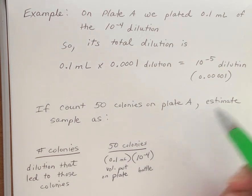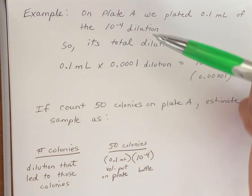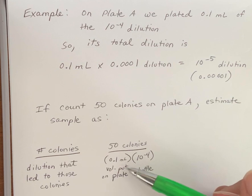So these two together are the same as this 10 to the minus 5. I'm just breaking it down for you here. So you're doing the number of colonies divided by the dilution that led to those colonies.